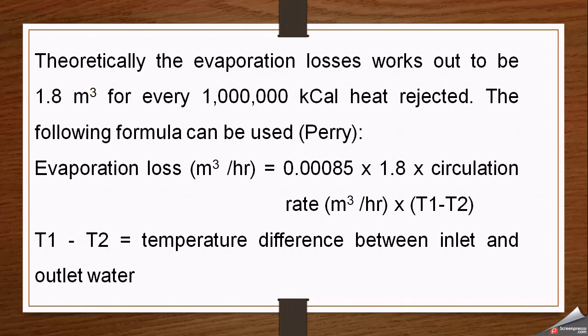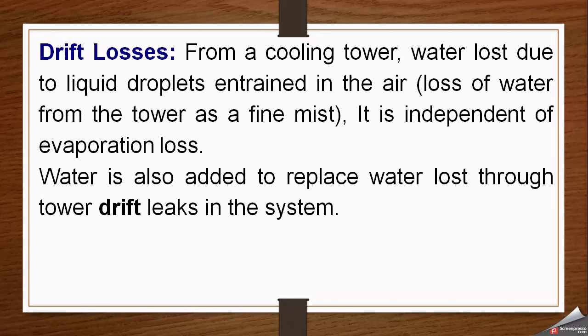The second loss is drift losses. When the cooling process takes place in the cooling tower, some water is lost due to liquid droplets entrained in the air. Small particles of water entrained in the air are lost from the tower as a fine mist. This loss is different from evaporation losses and is taken as independent of evaporation losses.